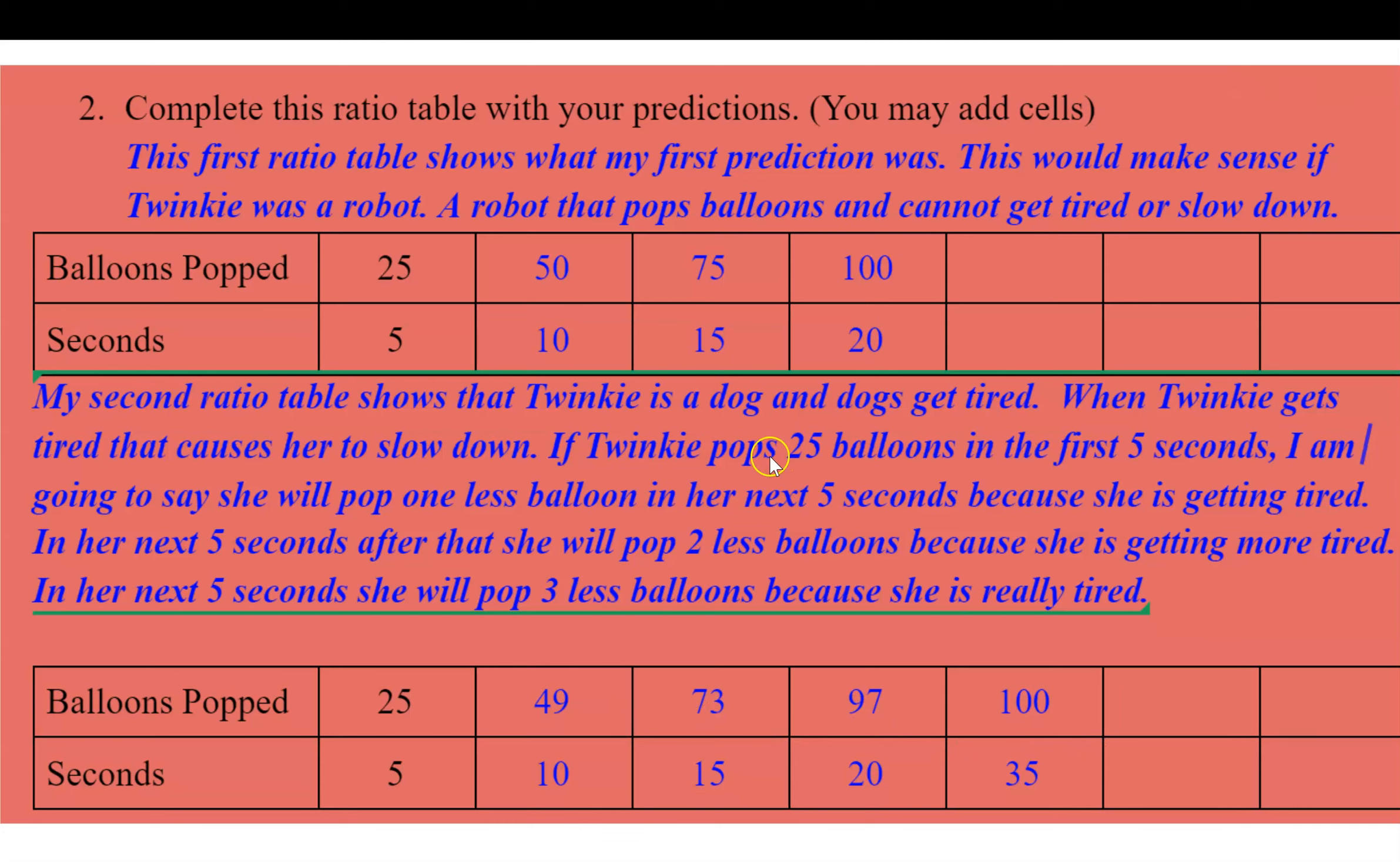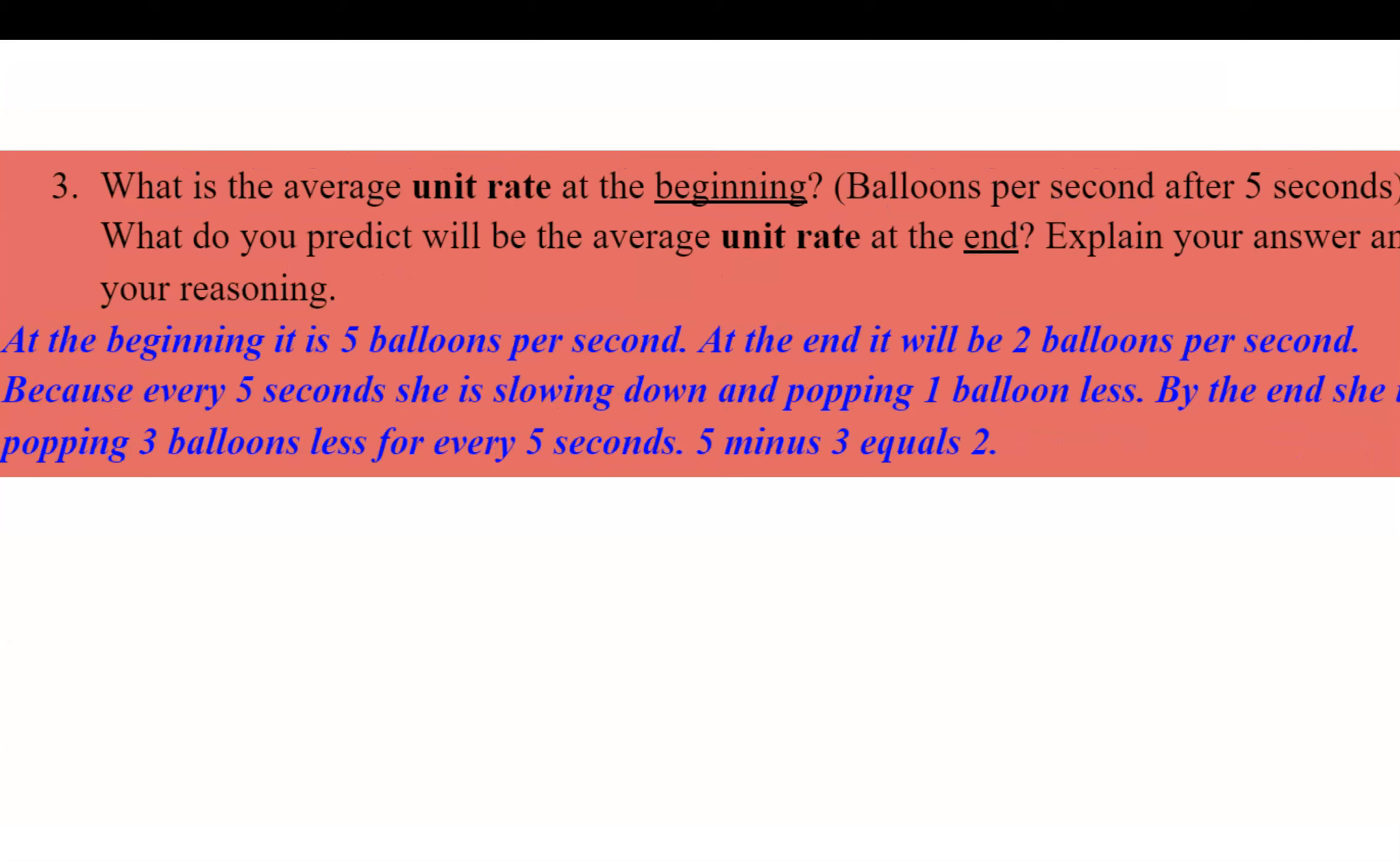Here, I'm just going to read the second part. You can see that she showed her reasoning, and she created a second ratio table. My second ratio table shows that Twinkie is a dog, and dogs get tired. When Twinkie gets tired, that causes her to slow down. If Twinkie pops 25 balloons in the first five seconds, I'm going to say that she will pop one less balloon in the next five seconds because she's getting tired. In her next five seconds after that, she will pop two less balloons because she's getting more tired. So she even came up with a formula.